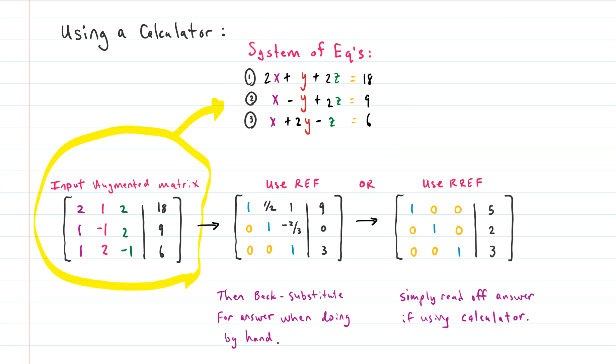We start by inputting the matrix, the augmented matrix associated with this system into our calculator. The augmented matrix is just the coefficients of the left side of the equation on the left side and then the right hand side numbers on the right hand side of the vertical bar. So it's just kind of like we took all of the variables and we deleted them, and the equal sign we deleted, and we just kept the numbers and that's what the augmented matrix is.